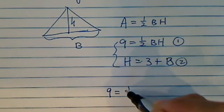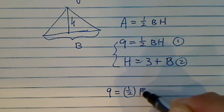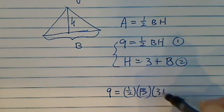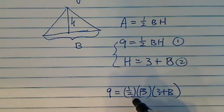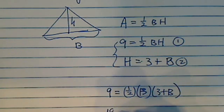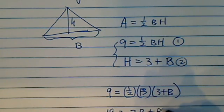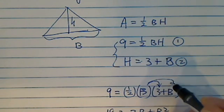So 9 is equal to a half base times height, which is 3 plus b. I'm going to multiply 2 on both sides. I have 18 equal to 3b plus b squared. So all I did is distribute it in here.